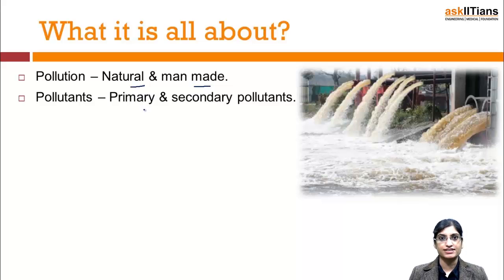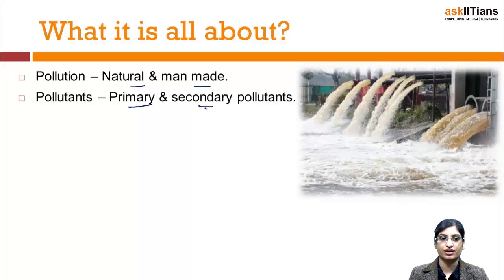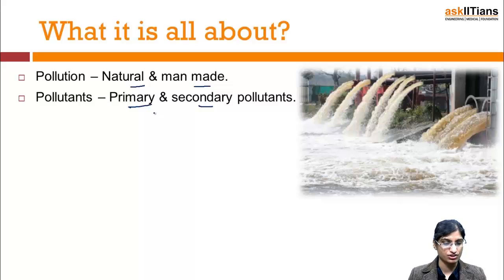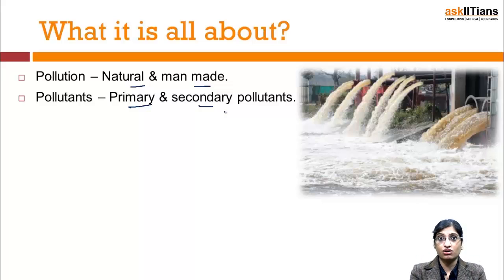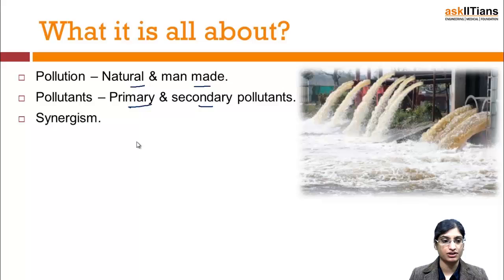Pollutants, if we categorize them, are of two categories: primary and secondary pollutants. Primary pollutants are formed by natural reasons — volcanic eruption, carbon dioxide, UV rays, cosmic rays. Secondary pollutants are formed when primary pollutants react with each other to form another form, which may or may not be more toxic.